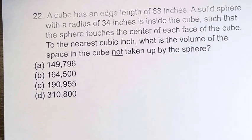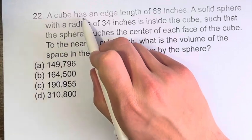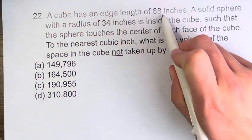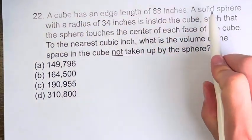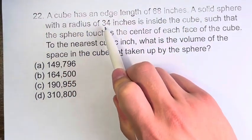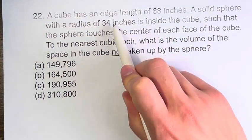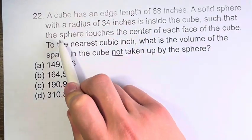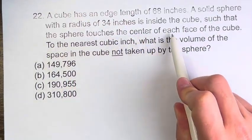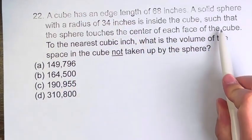Hello and welcome back to our video. In this problem, we're told that a cube has an edge length of 68 inches. A solid sphere with a radius of 34 inches is inside the cube, such that the sphere touches the center of each face of the cube.